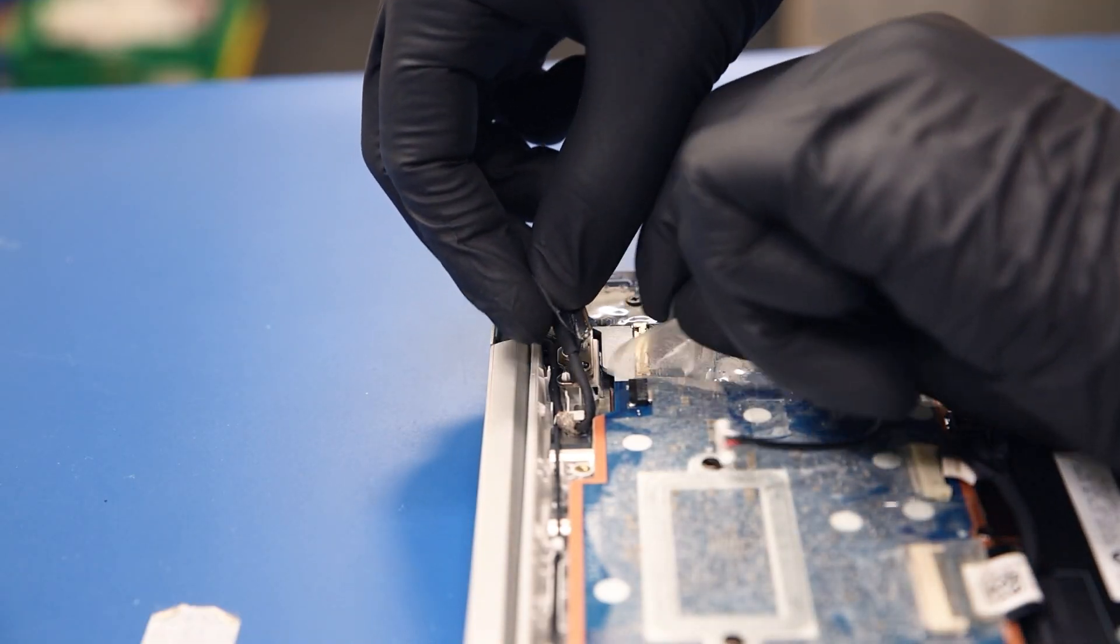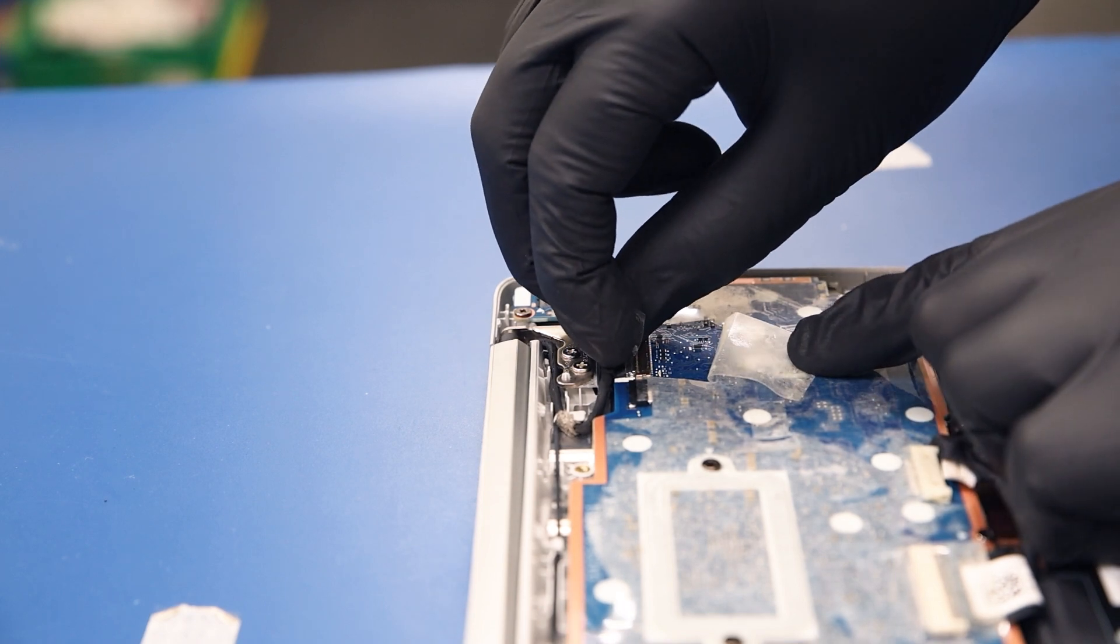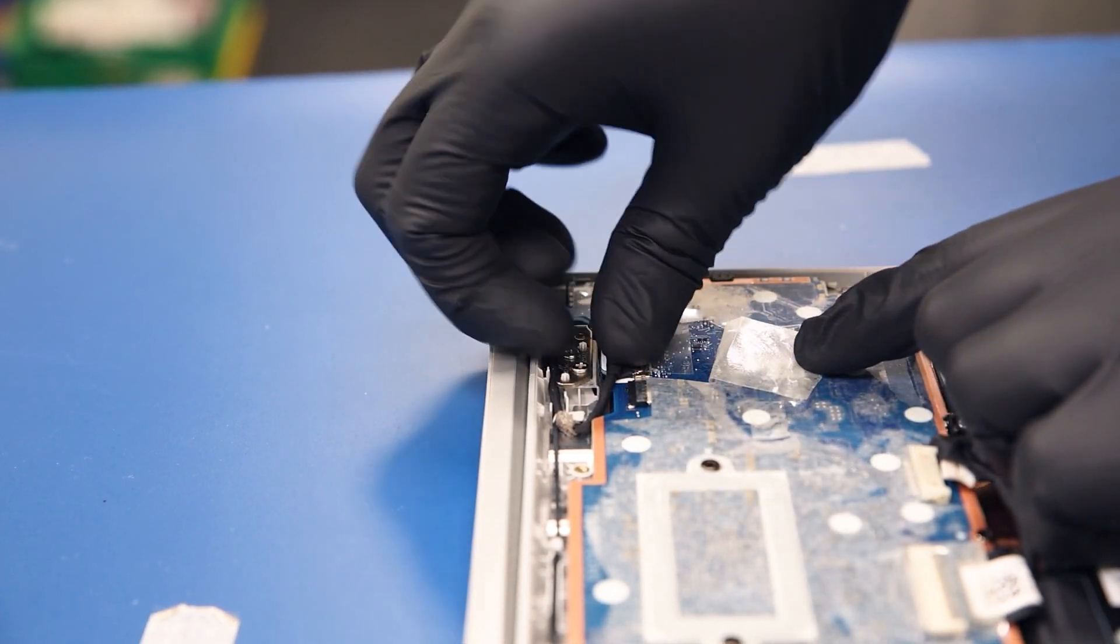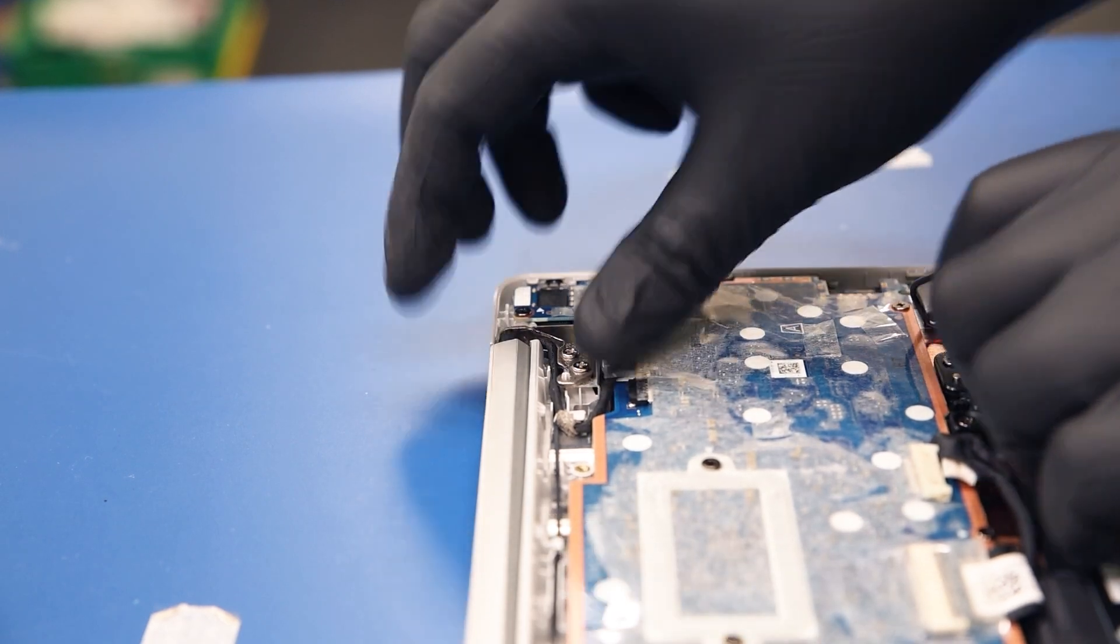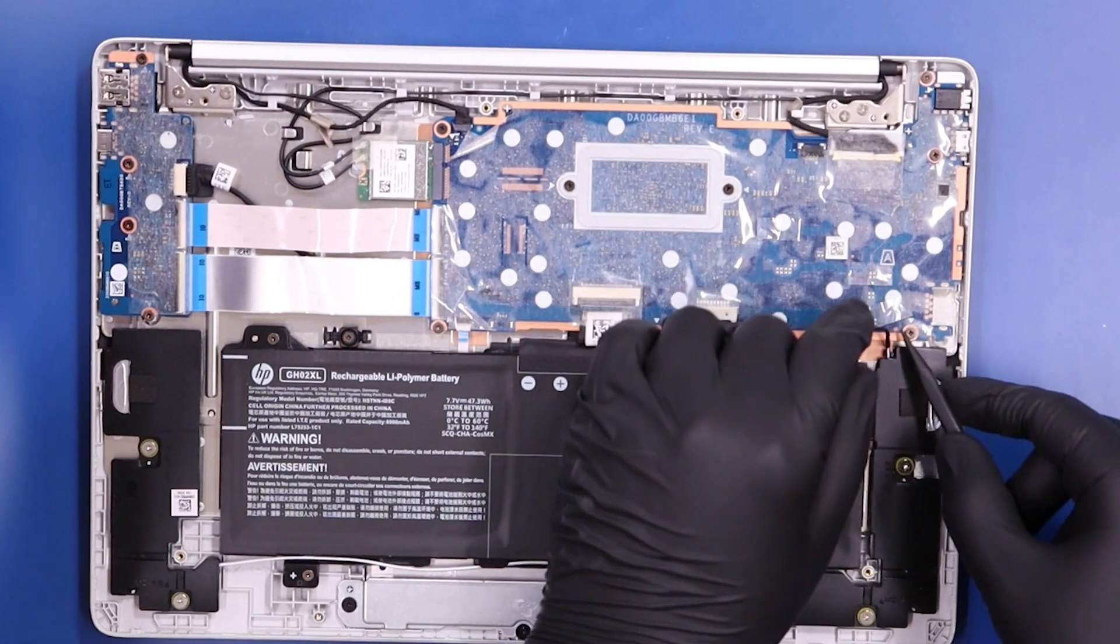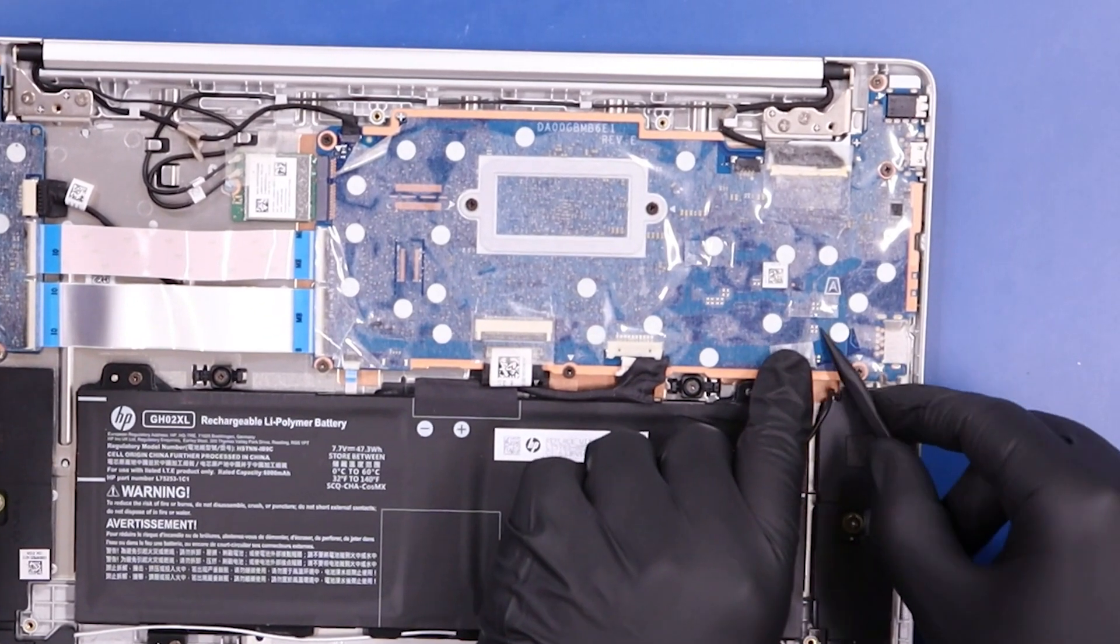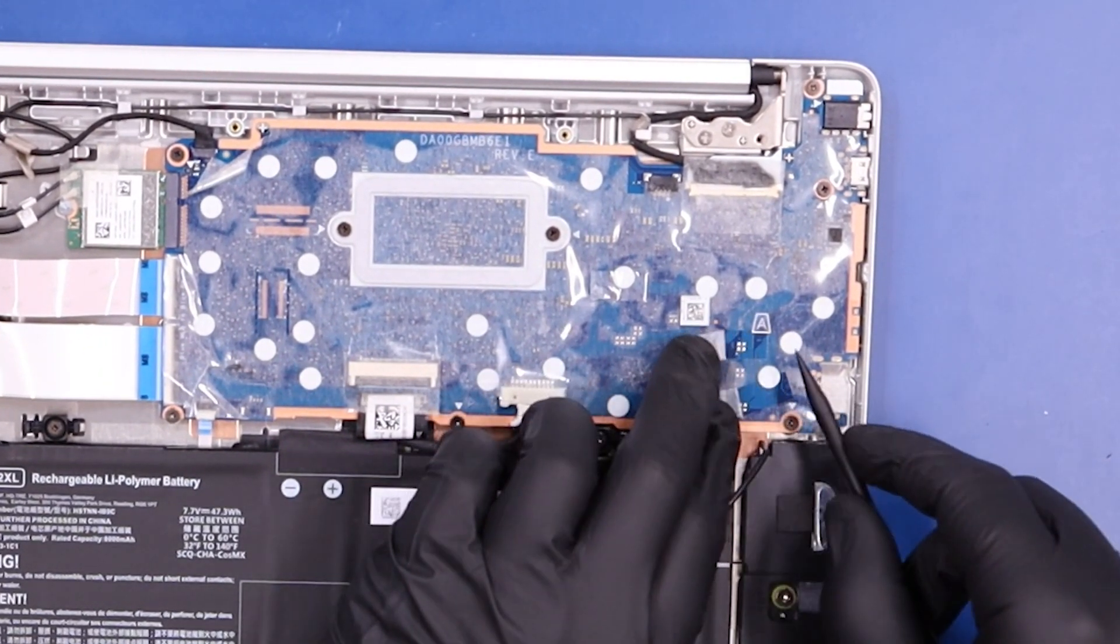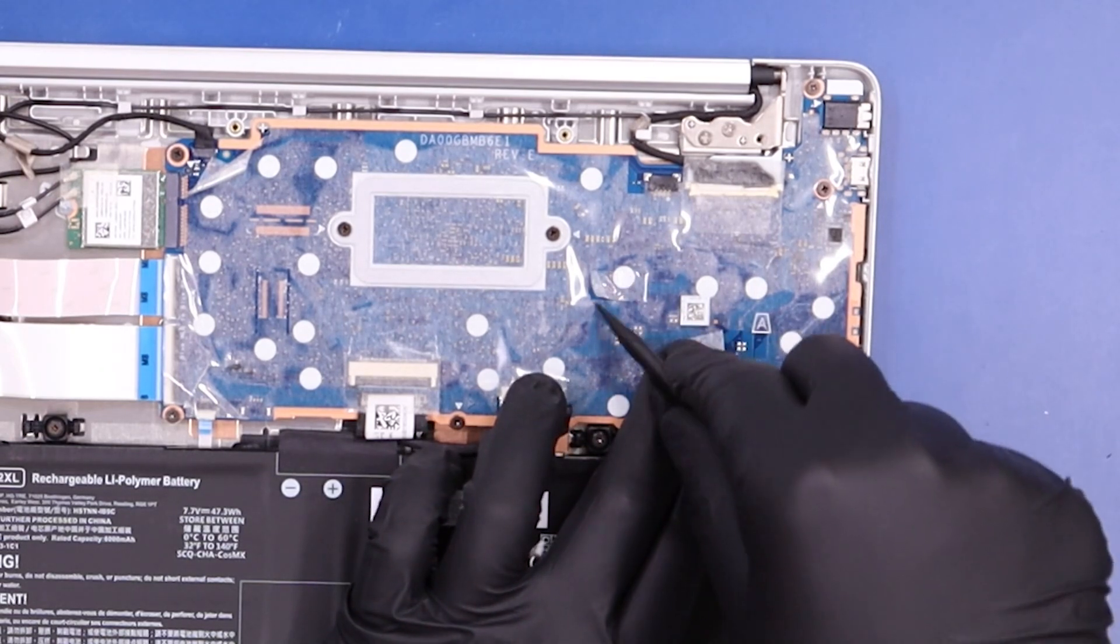Plug the LCD cable back into the motherboard. And finally, plug the speakers back into the motherboard and reapply the tape.